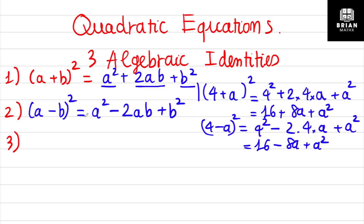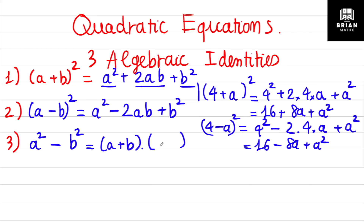The last algebraic identity is the difference of squares. You have two squared terms and you want to find their difference. So you have a squared minus b squared. This looks complicated, but the formula is very easy — you get two brackets. The first bracket contains the sum, and the second contains the difference.